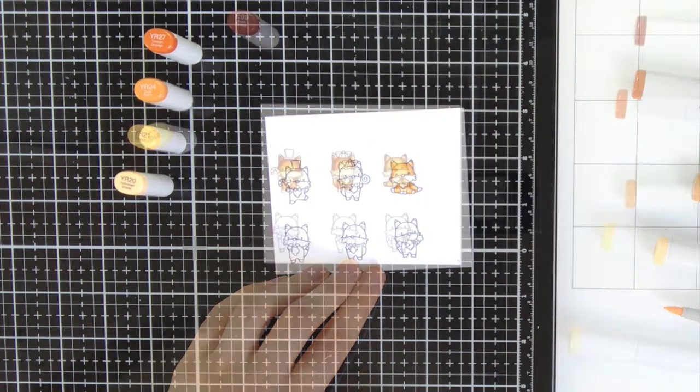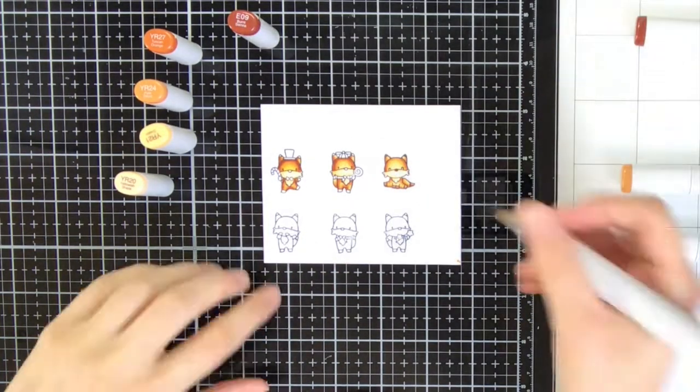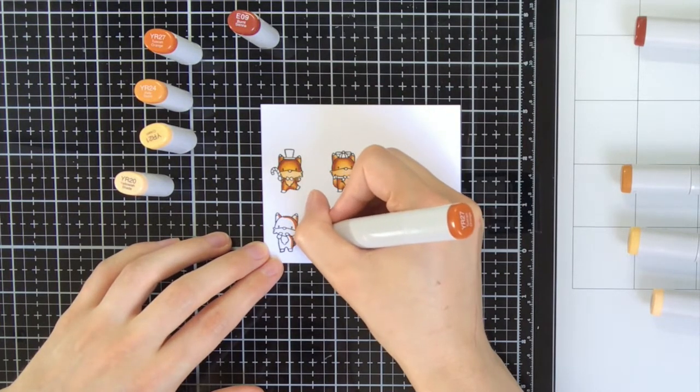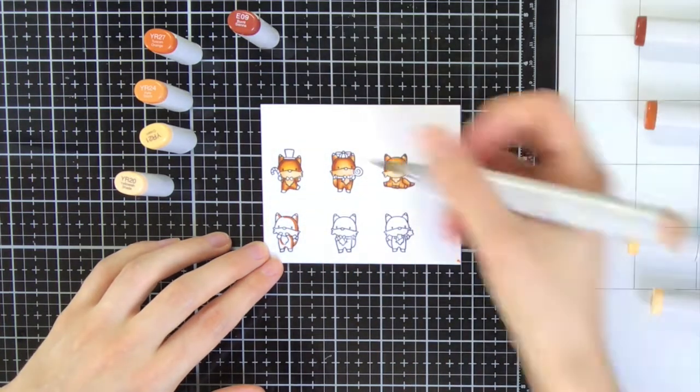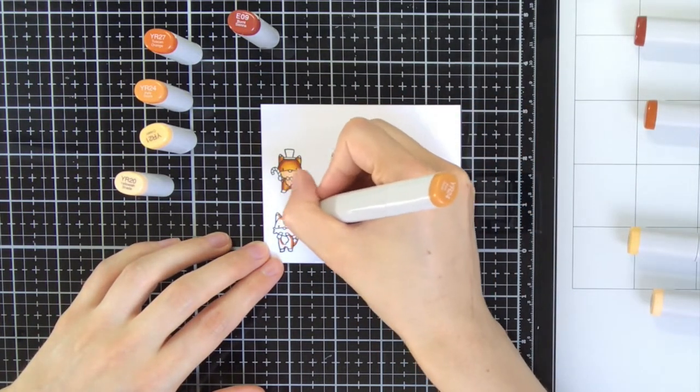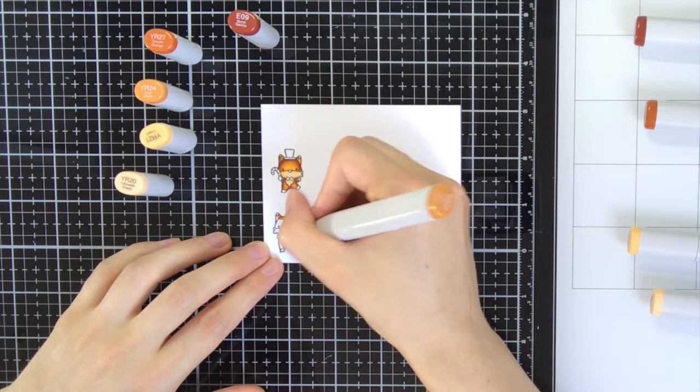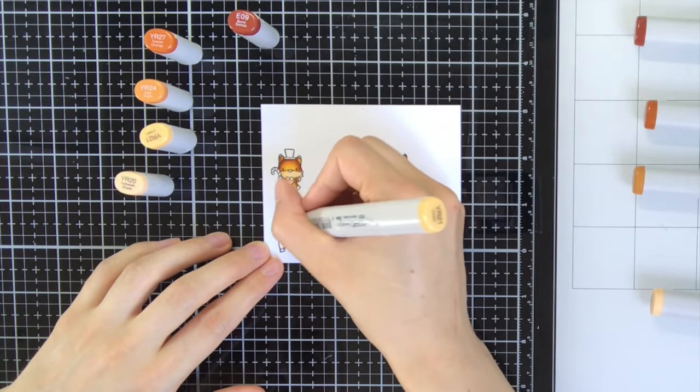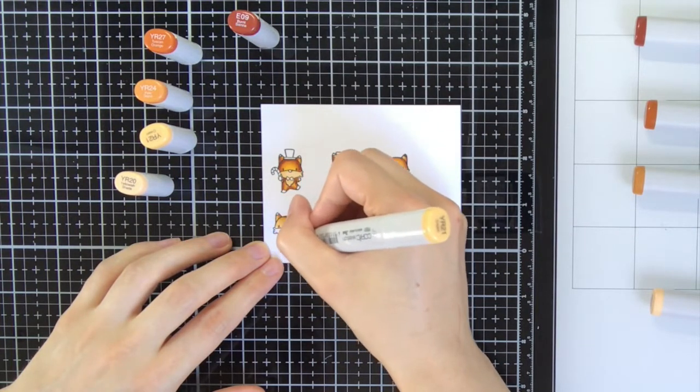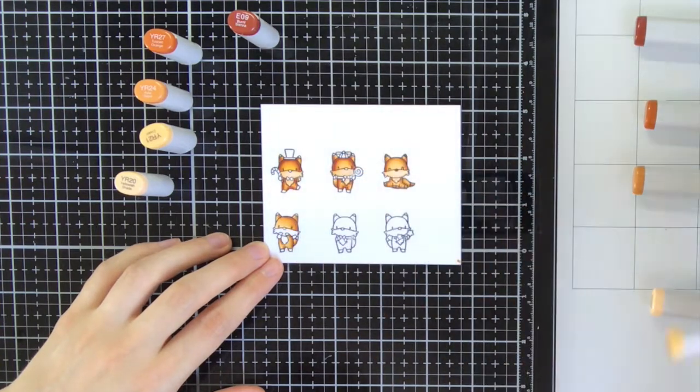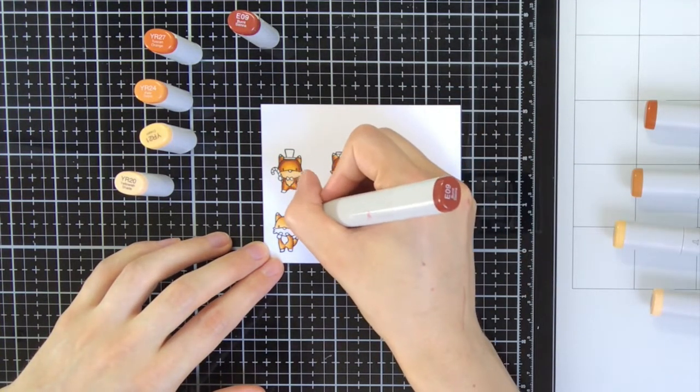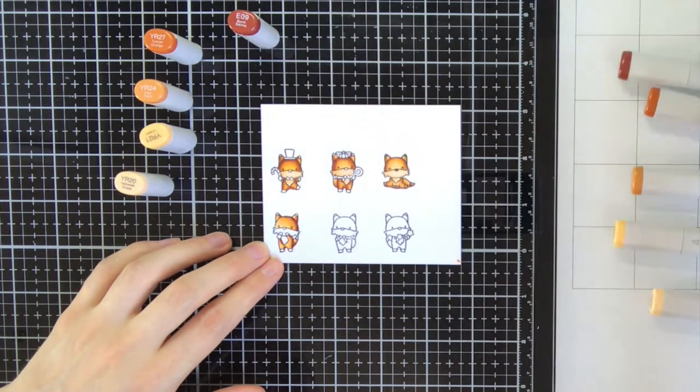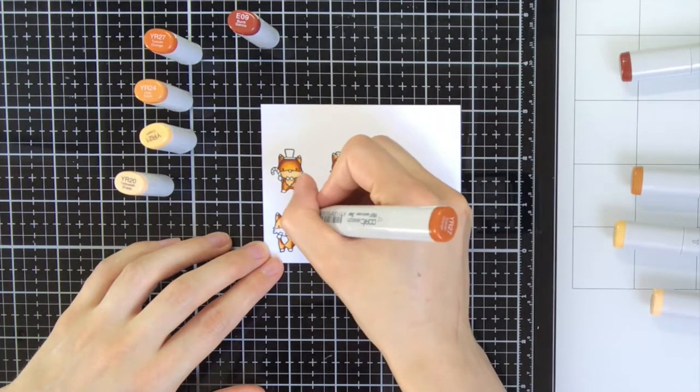To color the foxes I am using YR27, YR24, YR21, and YR20. For the first fox I just used those colors, but for all the other foxes I decided I also wanted to pull in the E09. I used the E09 as the darkest color just for the second layer of copic coloring. I always work in two layers as I find that gives the nicest result. For the first layer I start with YR27 and work my way down.